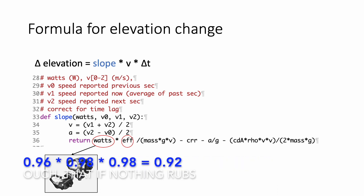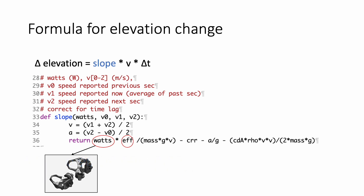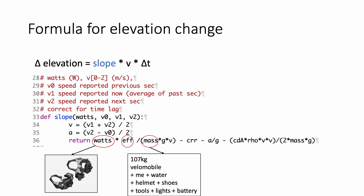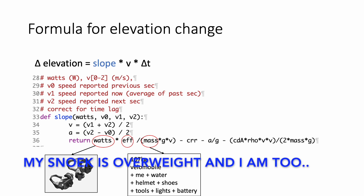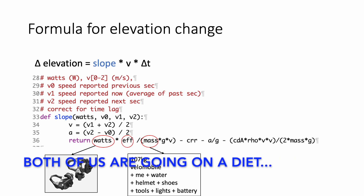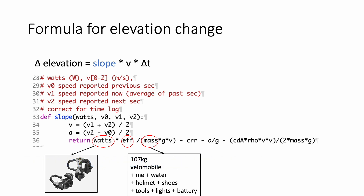We have two additional idlers on the Velomobile. I estimate each at about 2% loss, so we multiply by 0.98 twice. That's how we calculate the reduction from the wattage applied at the pedals. We also need the mass — the total mass of the Velomobile plus me, plus the water bottle, helmet, shoes, tools, lighting, radar, daytime flashers front and rear, and a heavy battery. For me, that totals 107 kilos.